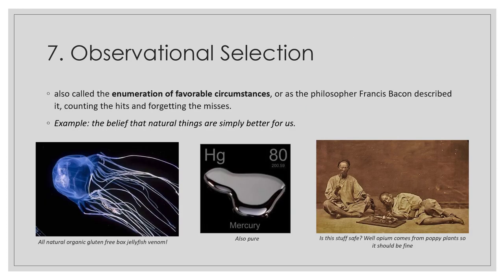You also have to be careful of observational selection — also called the enumeration of favorable circumstances. An example is the belief that natural things are simply better for us. You see this a lot: 'this is all natural so it will be better for you.' But there are a lot of natural things that are really not good for you. You could have all natural, organic, gluten-free box jellyfish venom — that's not going to be good for you. Or highly pure mercury, which is all natural but also not good for you. Opium comes from poppy plants, which are natural, but we know opium can cause addiction and really deteriorate our health. Be careful especially when advertisements suggest that natural is just better.